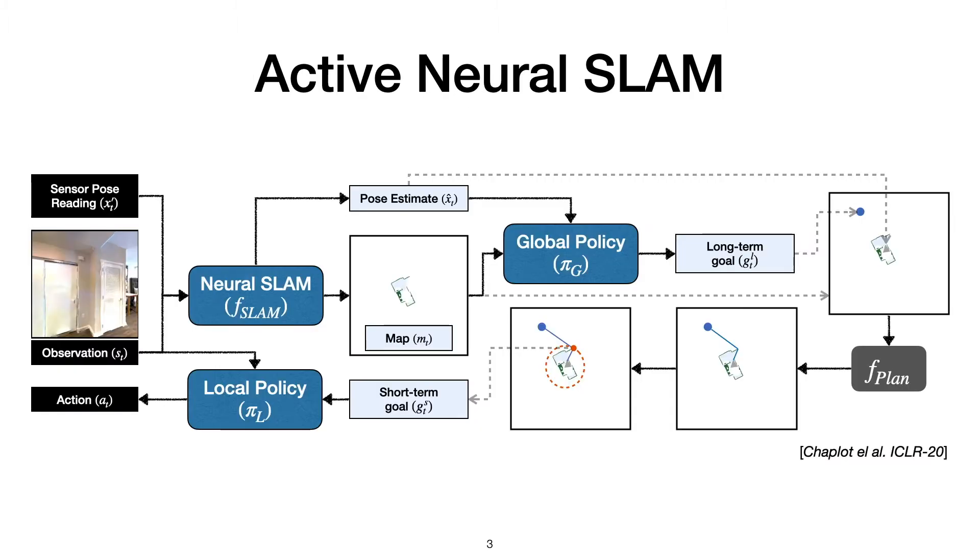To tackle the object goal task, we build upon the Active Neural SLAM model, which led to our winning entry in the Habitat Challenge last year. Active Neural SLAM is a modular navigation system which builds explicit obstacle maps and uses them for coverage-based exploration and point-goal navigation.